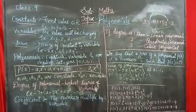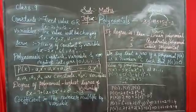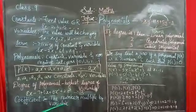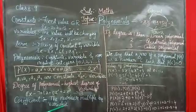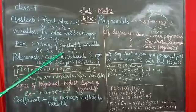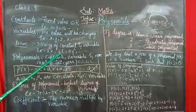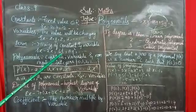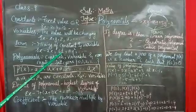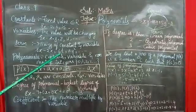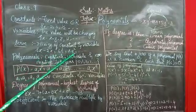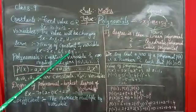Coming to the next topic: coefficient. Coefficient is nothing but the number multiplied by a variable. For example, what is the coefficient of T here? The coefficient of T is 6. The number multiplied by the variable is known as the coefficient. The coefficient of X here is 2, and the coefficient of Y square is A.